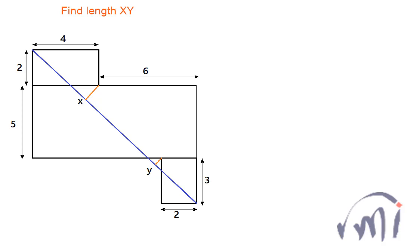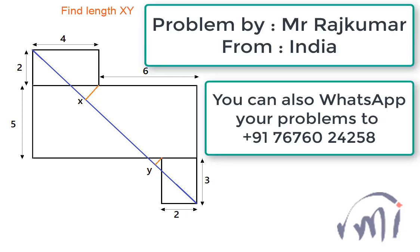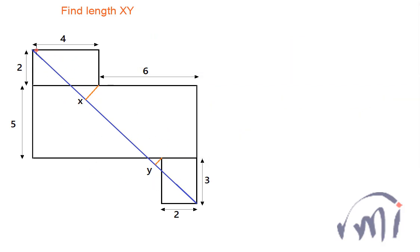Here we have a problem which was sent by Mr. Rajkumar from India. In this problem we have three rectangles arranged in a particular fashion, and these are the dimensions of the rectangles. A line is drawn from a point of the first rectangle to a point of the last rectangle, and then two perpendiculars are drawn from these points to the line AB. We have to find the length of XY.